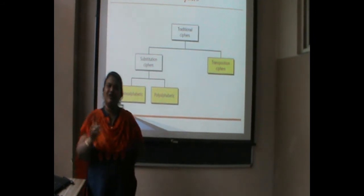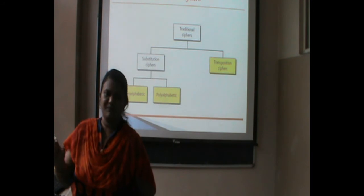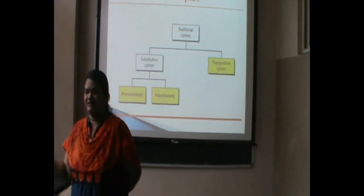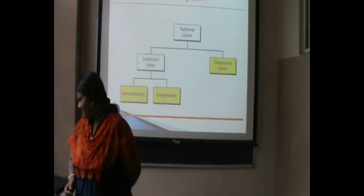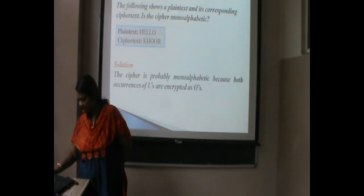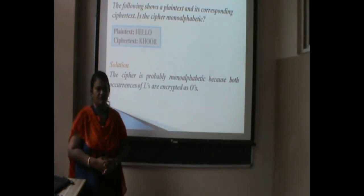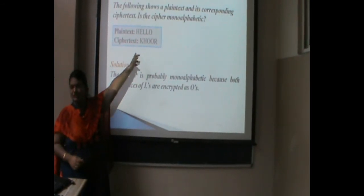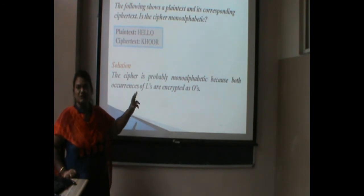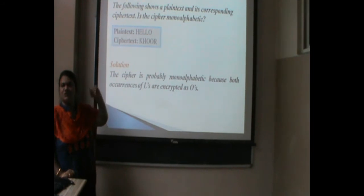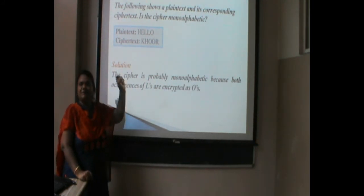In monoalphabetic techniques, we use one character to replace each occurrence of the same character. Some code is given and using that code, we always replace the same character with the same character. That is the monoalphabetic substitution cipher. In polyalphabetic, each time a new character is used for the replacement. For example, the plaintext is 'HELLO'. Here we are using a substitution cipher — also called the Caesar cipher. We replace each character by shifting three places down.